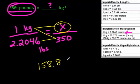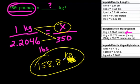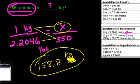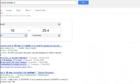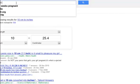158.8, and remember the answer is in kilograms because on top we have kilograms. And there it is. Let's check if Google agrees with us here, so I'm going to type in 350 pounds to kilograms.